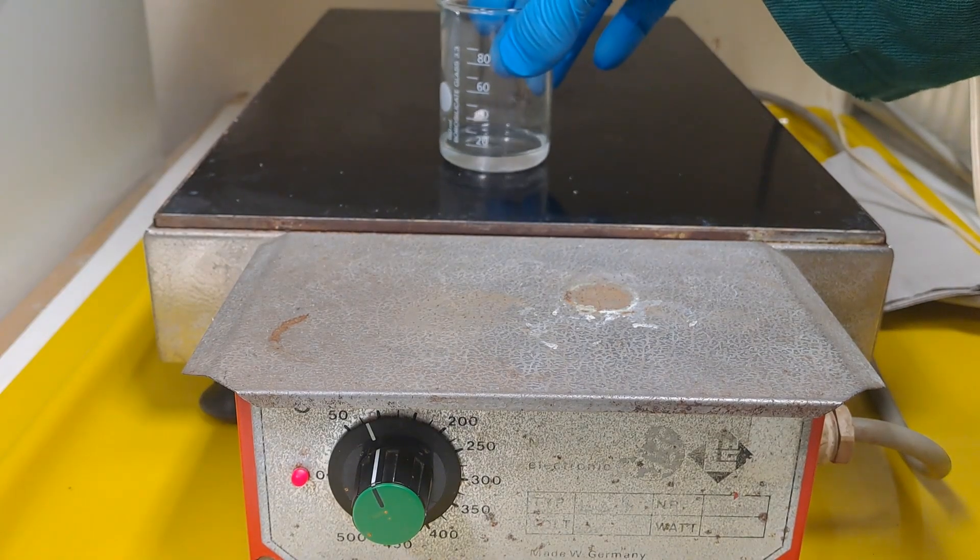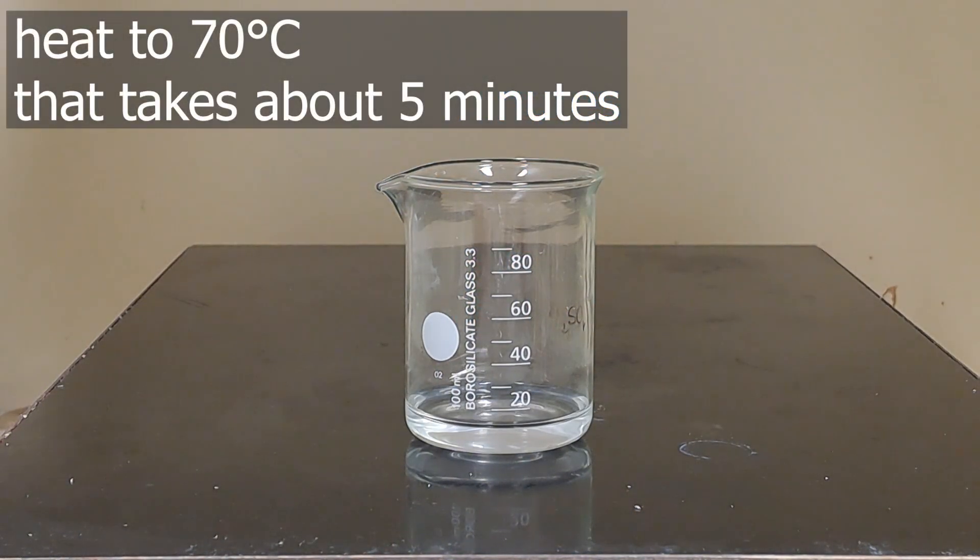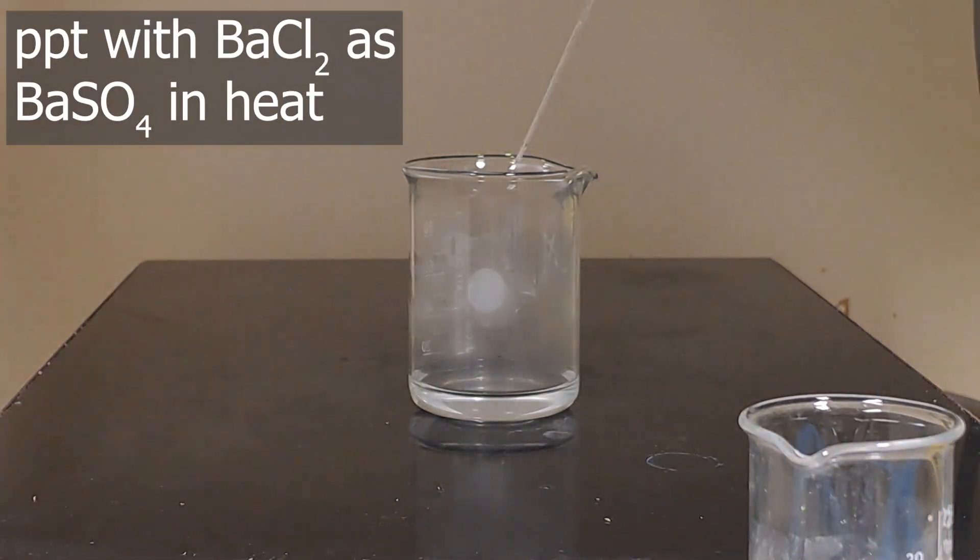Heat this mixture for about five minutes until it's warm, not boiling. Visible condensation on the beaker is a good indicator if it's warm enough. Add enough barium chloride until no more precipitate forms.